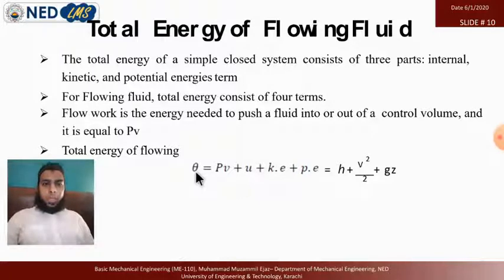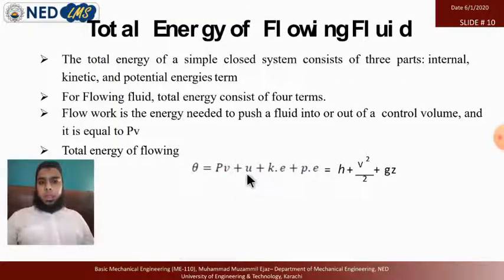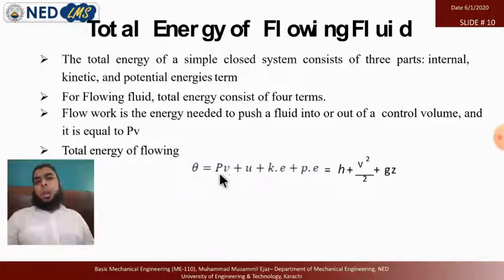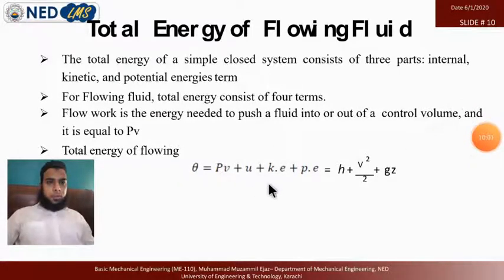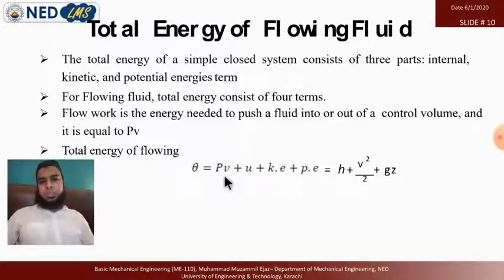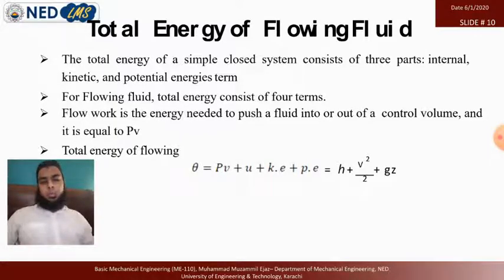Theta includes internal energy, kinetic energy, and potential energy — plus PV, which is the flow energy. In a closed system, PV represented pressure-volume work for a moving piston, but here the flow energy represents the work done to push the fluid through the control volume. Without this energy, fluid cannot enter or leave the control volume.